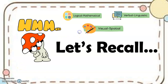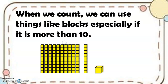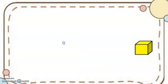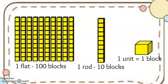Now, let's recall some things. So when we count, we can use things like blocks, especially if it is more than 10. Remember that if we have one unit, it is counted as one block. If we have 10 blocks, then it's called one rod. And if we have 100 blocks, it's called one flat.